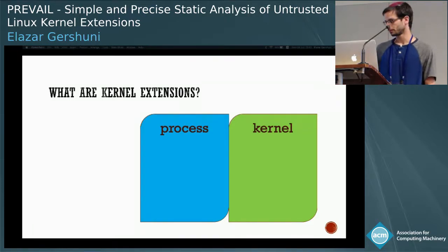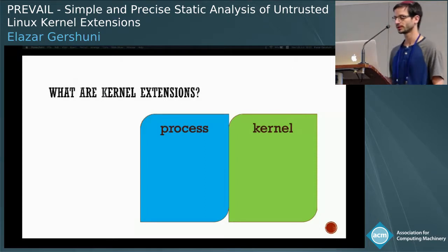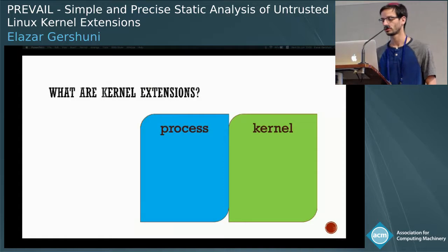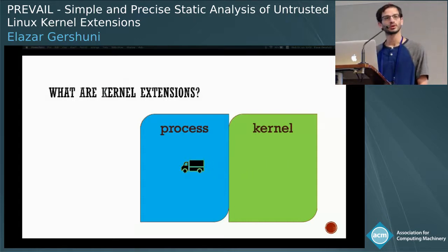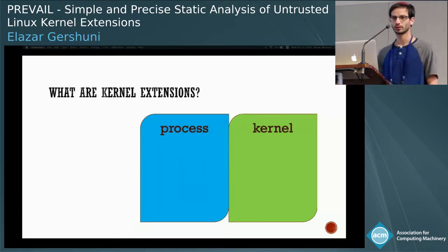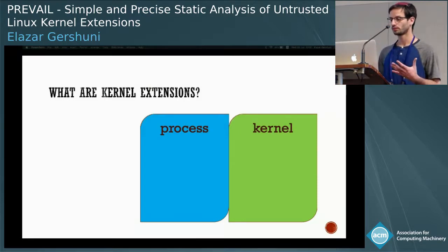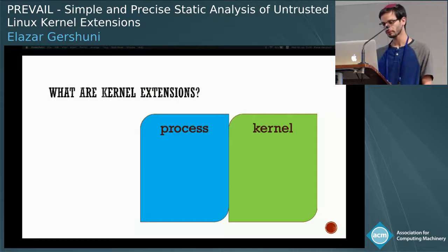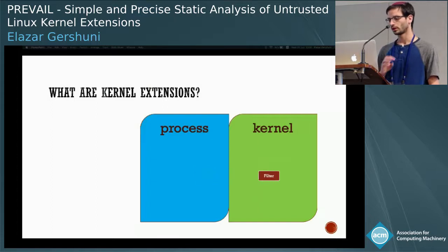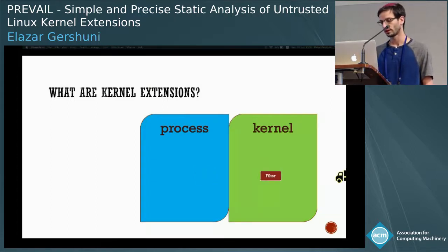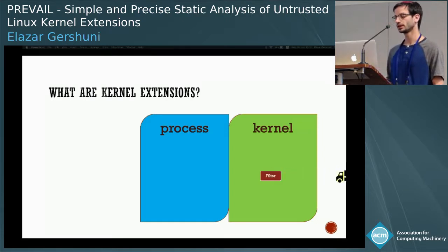So, what are kernel extensions? Let's look at a setting where we have a user space process and the kernel, and consider packets arriving from the network. When packets arrive, the user space process cannot handle them directly, so the kernel must copy them to user space. But the process might decide it has no use for them and just drop them — meaning we copied a very large packet to user space for no reason at all. The idea behind kernel extensions is that we can write a simple program that will serve as a filter, register it inside the kernel, and then only packets we are interested in are copied to user space.